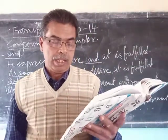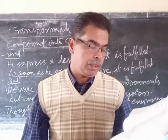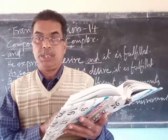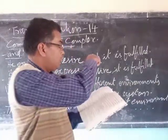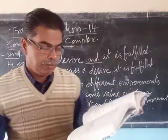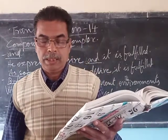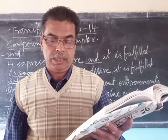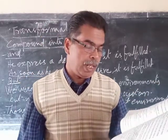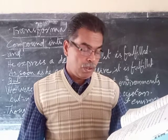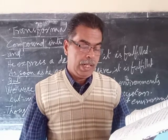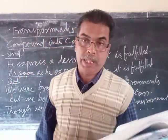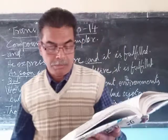In a compound sentence consisting of two coordinate clauses, the second clause is a little more important than the first one, since it completes the sense. So while converting a compound sentence into a complex sentence, the second clause is usually made the principal clause and retained, and the other clause is linked to it with a suitable subordinating conjunction, making some changes.